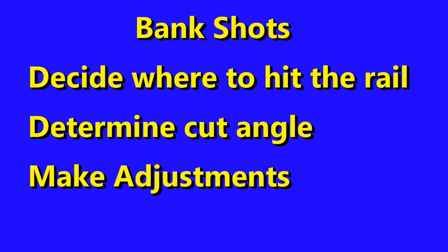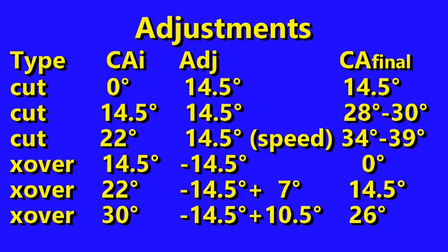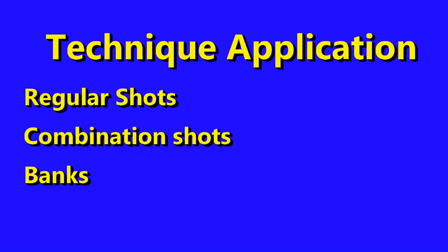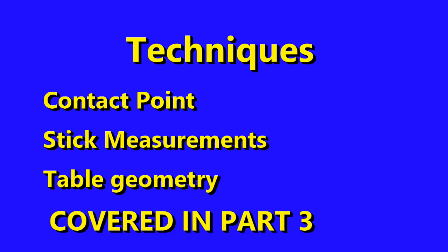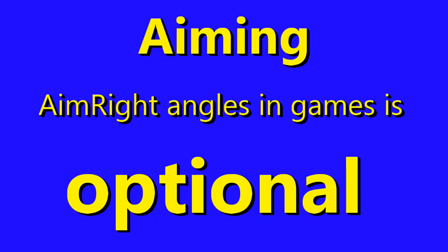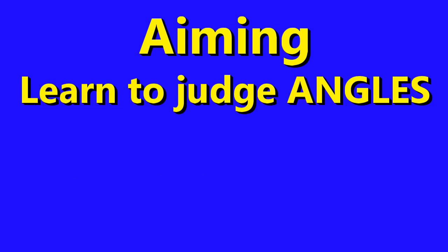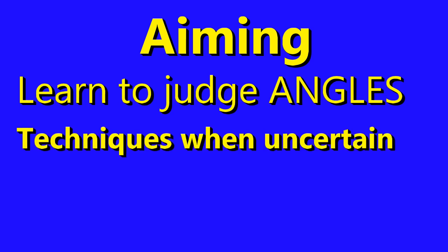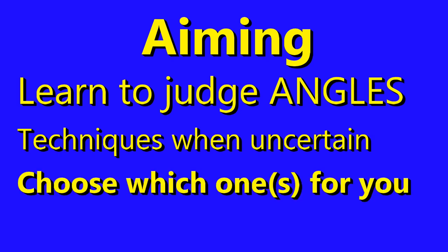So we decided where to hit the rail, determined the cut angle, made adjustments, and shot. Here in part two, we looked at regular shots, combination shots, and bank shots. We used a contact point technique and many stick measurement techniques. Table geometry will be covered in part three. Remember, it's optional whether you want to use AimRight angles in games — judgment is the best way, and you need to develop that judgment. These techniques are alternatives when you're uncertain about the cut angle. You don't need to learn all techniques — just find ones you're comfortable with.